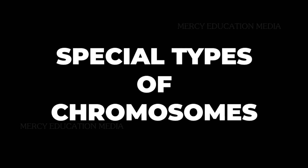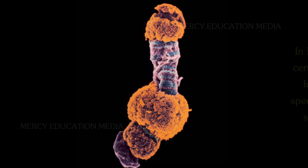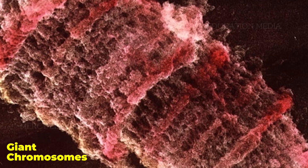Describe the special types of chromosomes. In eukaryotic organisms, certain chromosomes are found only in certain special tissues and are not seen in other tissues. These chromosomes are larger in size and are called giant chromosomes.